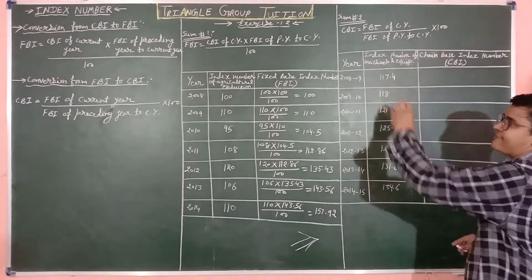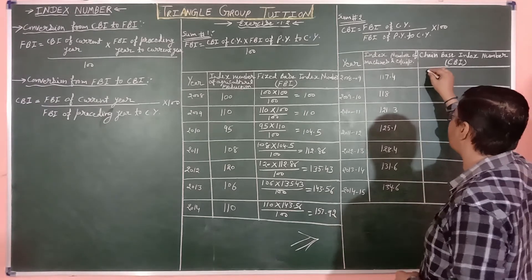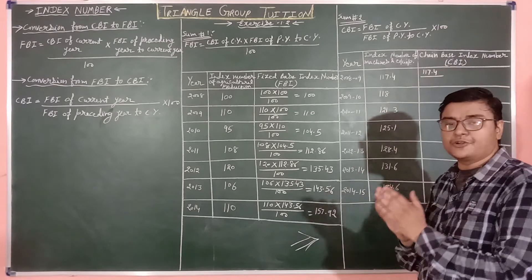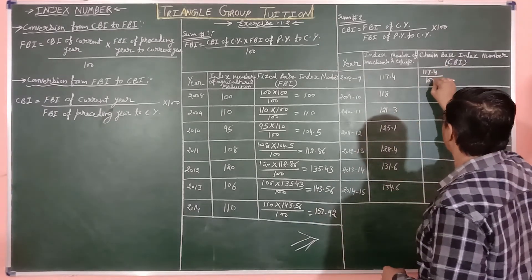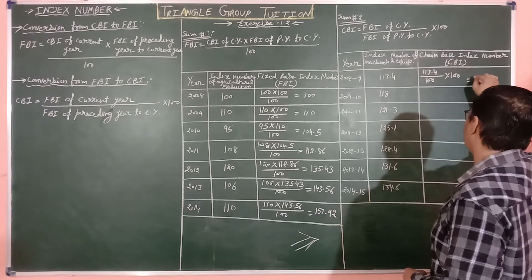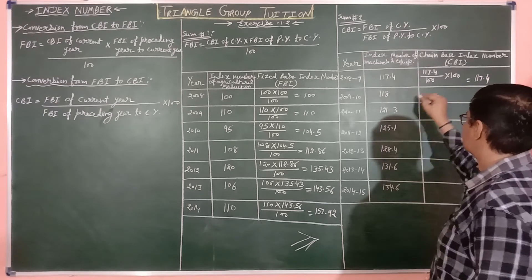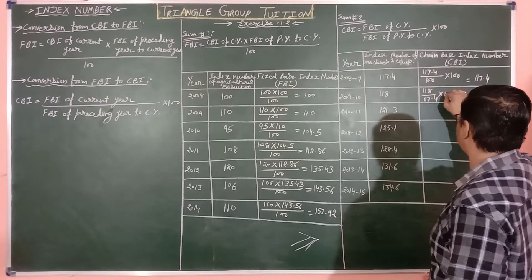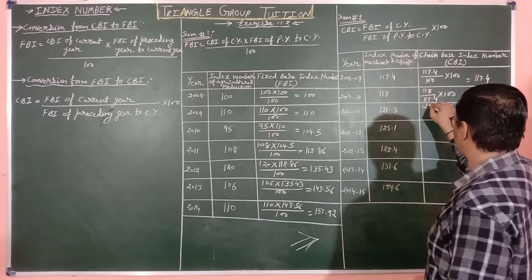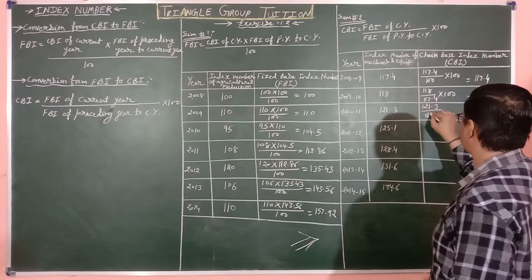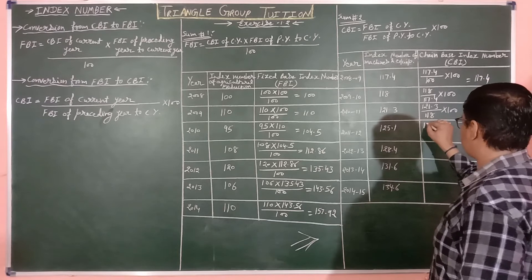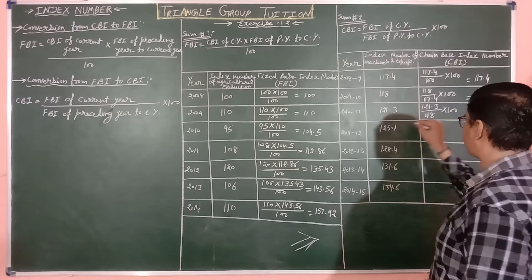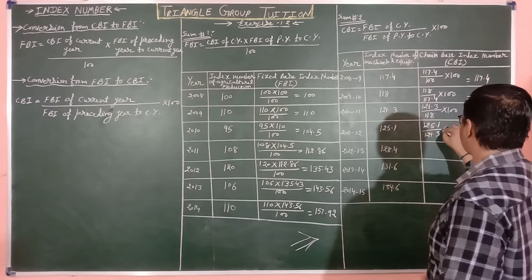For year 2007-8, the current year FBI is 117.4. Since it is the base year, the answer is 117.4. Next: FBI is 118, preceding year index is 117.4. So: 118 multiplied by 100, divided by 117.4 — answer will be 100.51. Next: current year FBI is 121.3, preceding year is 118. So: 121.3 multiplied by 100, divided by 118 — answer will be 102.80.